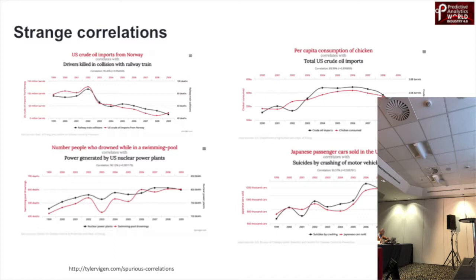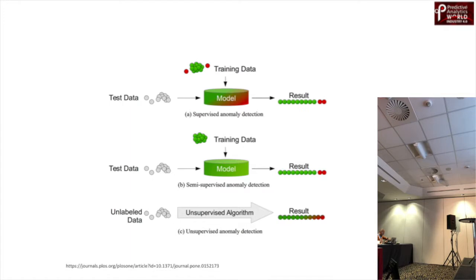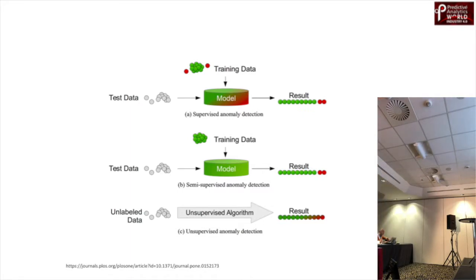Some fundamental details about training types: supervised training is when you give both good labels and bad label data to the model, and the model learns both. Semi-supervised is when you train only on good data, and the model learns to identify bad data and hence predicts. Unsupervised anomaly detection is when the model has never seen what is right or wrong, and eventually starts predicting what is right and wrong.